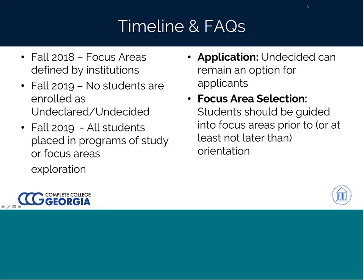By fall 2018, we expect all campuses will have defined their focus areas. Having looked at the momentum of your implementation plans, most campuses are either well on their way or have already completed this step and are simply having these things reviewed. By fall 2018, we expect them to be in hand, but we do not expect them to be in place yet.